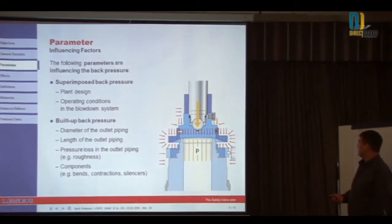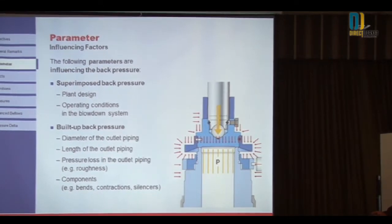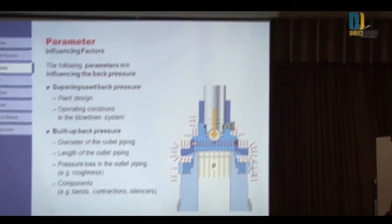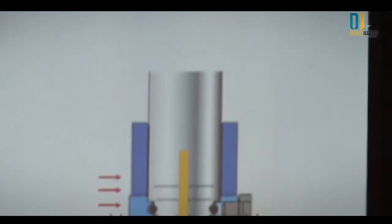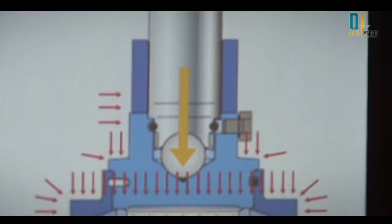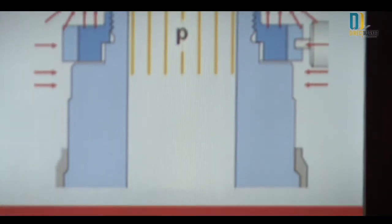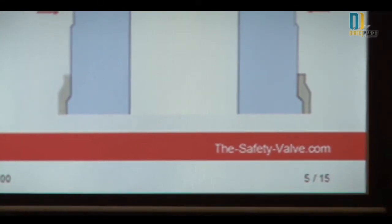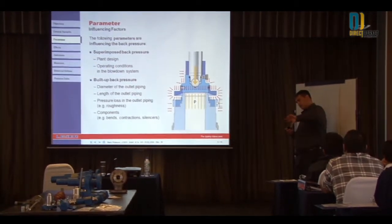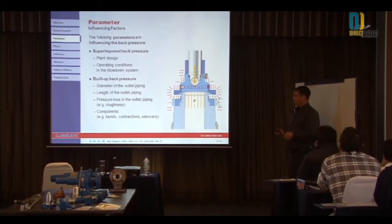Some of the reasons there's superimposed back pressure are plant design and operating conditions in the blowdown system. Built-up back pressure influencing factors include the diameter of the outlet piping, the length of the outlet piping, pressure loss, and friction through your system when the valve goes off and tries to relieve.